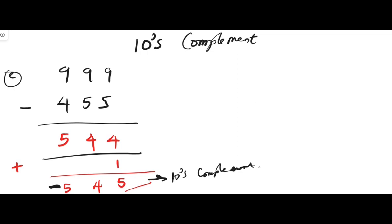So negative 222 minus 323 equals negative 545. It is negative because it is in ten's complement.